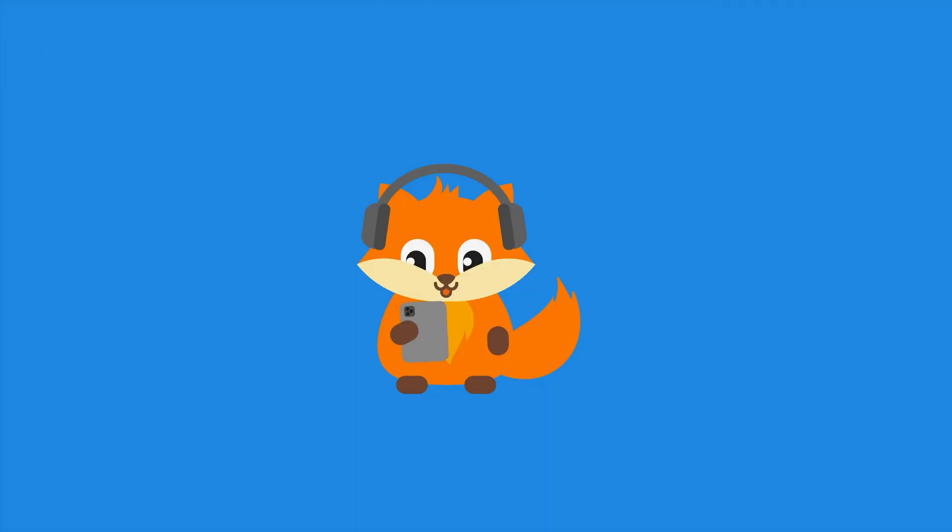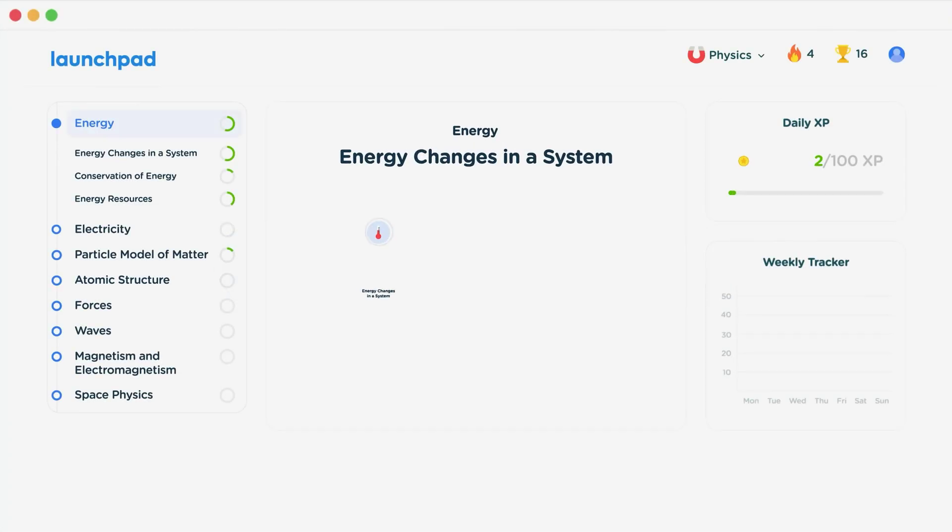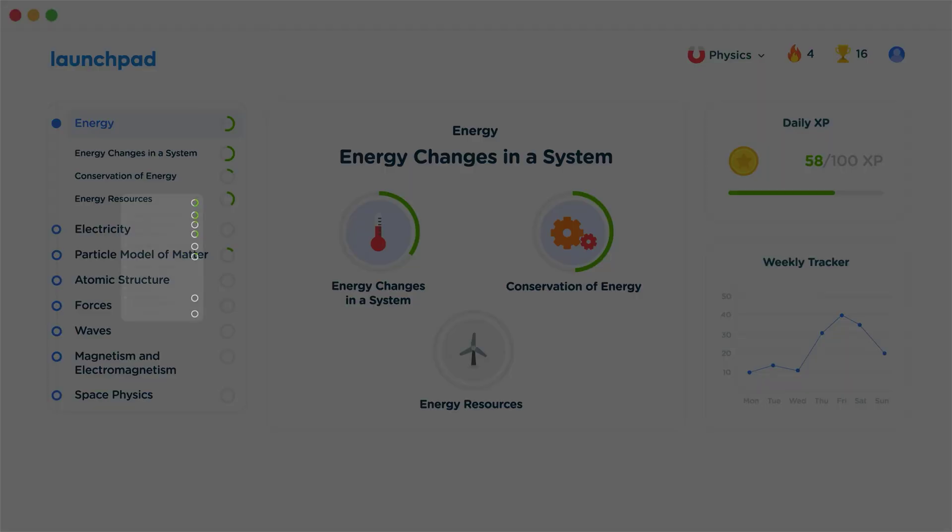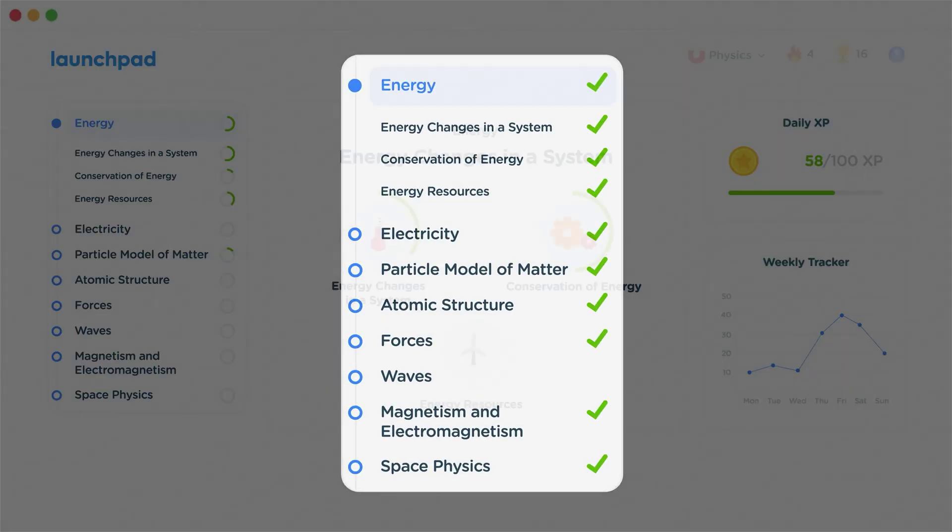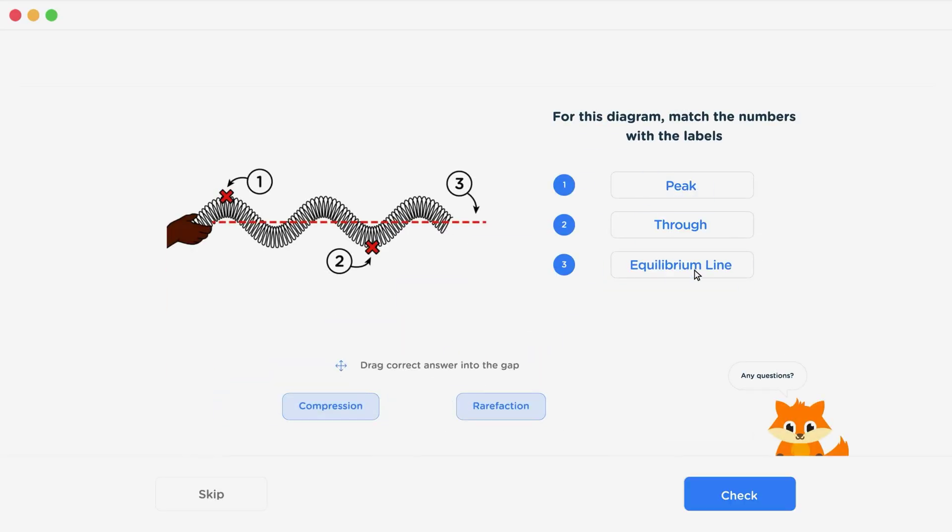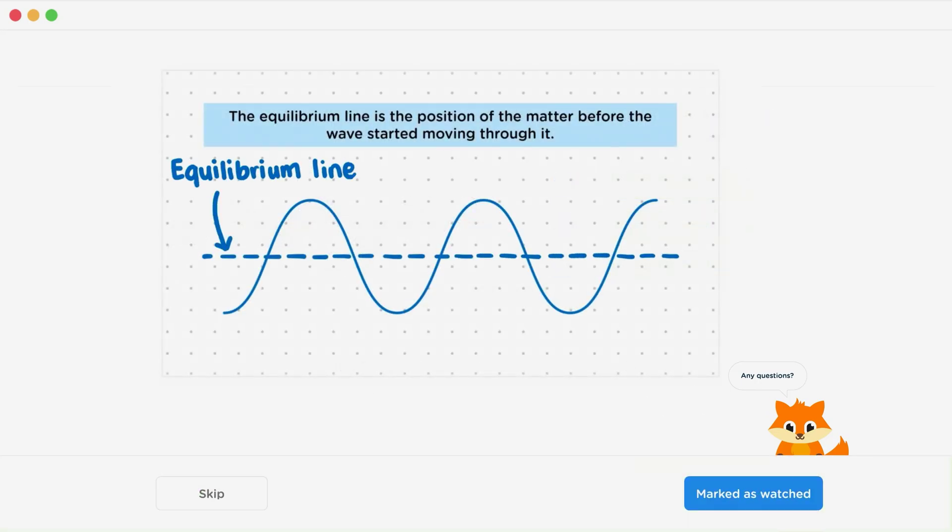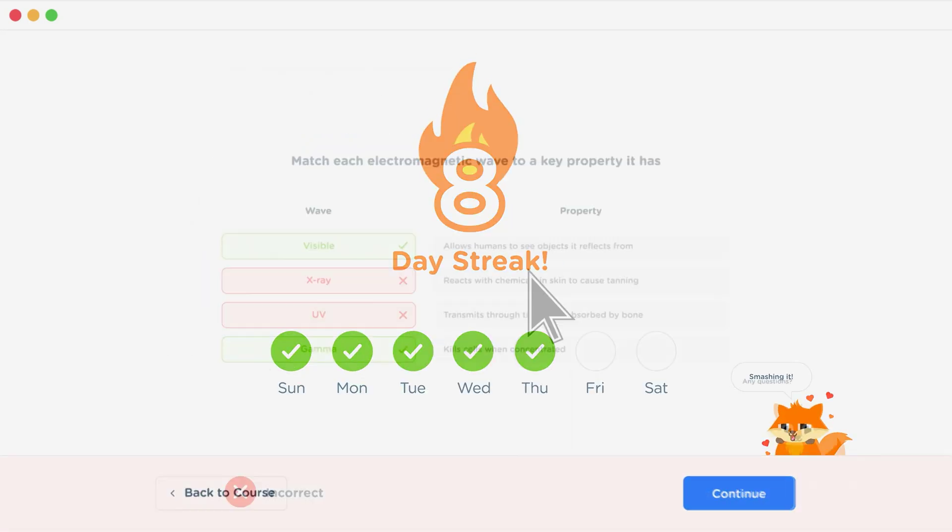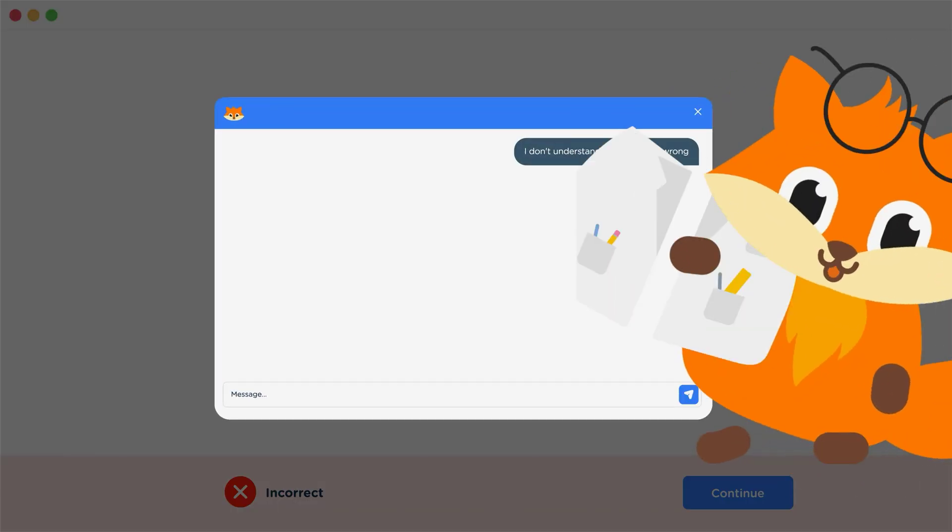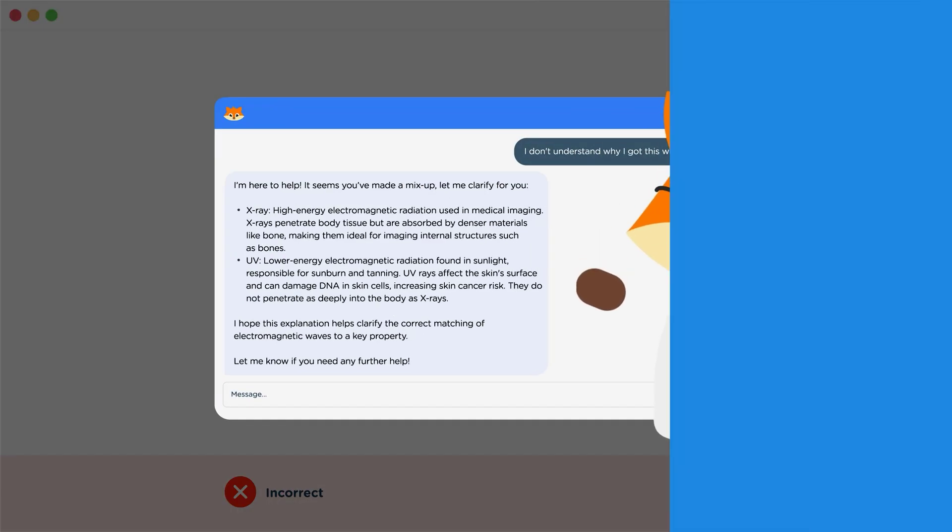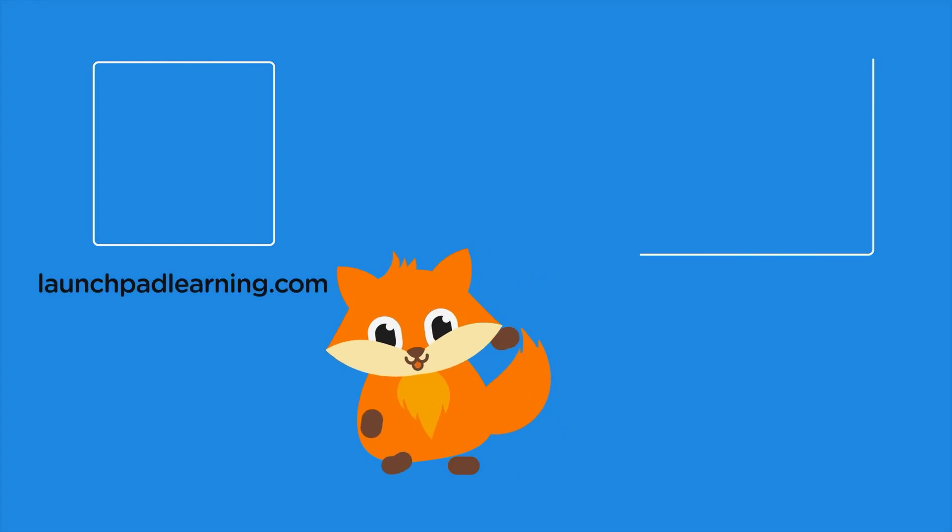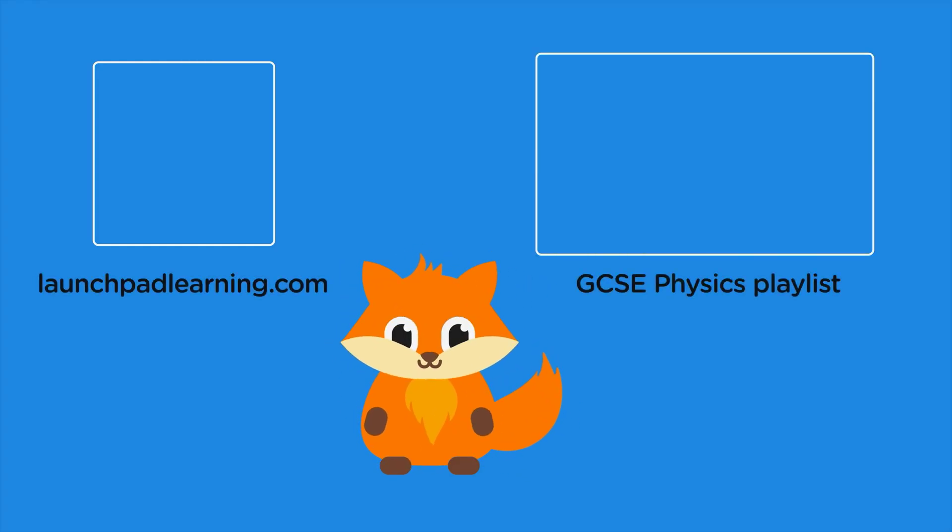If you want to take your GCSE revision to the next level, head over to launchpadlearning.com and check out our smart learning platform that's been designed to get you top results in your exams. We cover your whole specification and make revision fun with interactive quizzes, easy to follow videos, and more. You'll be kept motivated by your own AI tutor who's here to support you every step of the way. To check it out for yourself, click here or click here to keep watching a selection of the videos from our full GCSE physics course. See you there!